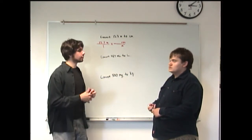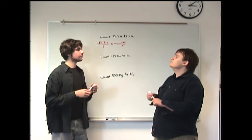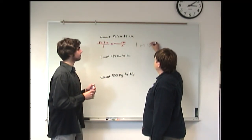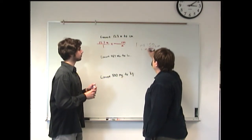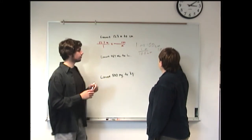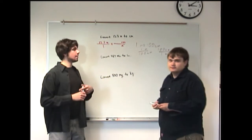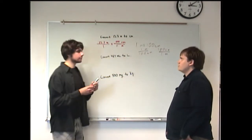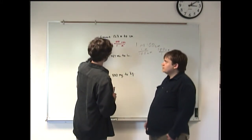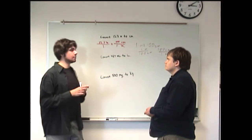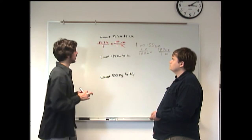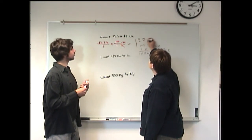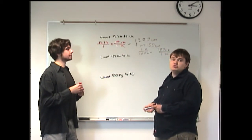The question is: how many centimeters go in one meter? You can look this up, but it's pretty important that you know it. One meter equals 100 centimeters — you can represent it as one meter over 100 centimeters, or 100 centimeters over one meter. In this case, we put 100 centimeters on top and one meter on the bottom. Our meters cancel out, we're left with centimeters, and we multiply to get 1,230 centimeters.